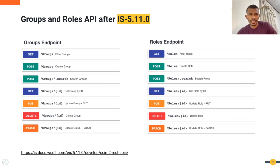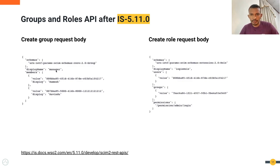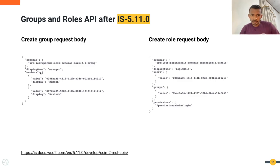Let's look at some sample API requests and responses to get a clearer idea about groups and roles separation. This is the body of a sample POST request for the groups endpoint to create a group called 'manager'. We can also mention group members here. The display name is a required attribute; other attributes are not required. The display name must be a string, and the members attribute is a multi-valued complex attribute — meaning we can have many values inside an array, and each value inside the array is a complex value, which is an object.